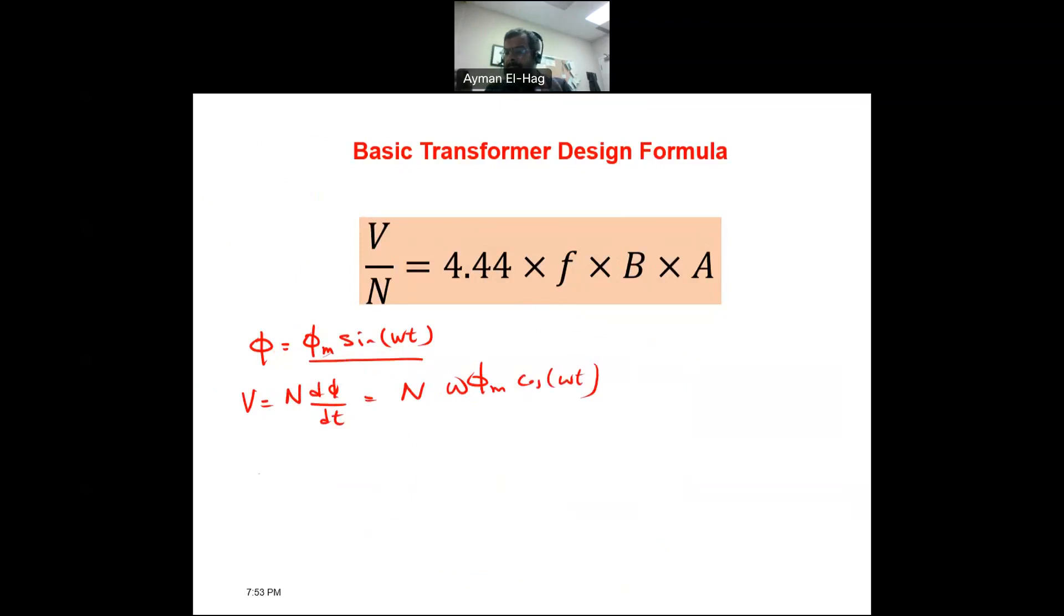Now, as we know, we work more in RMS value, not peak value. So, your V_rms will equal to N omega, and this will be your flux, divided by root 2. So, take N to the other side. So, the voltage per turn is equal to omega is 2 pi f times the flux divided by root 2. Now, 2 pi divided by root 2 is this weird number. So, this is equal to 4.44 times the frequency times the flux. But, what is the flux density? The flux density basically is equal to the flux divided by A. So, the flux is equal to B times A. So, that is how we derive this formula.